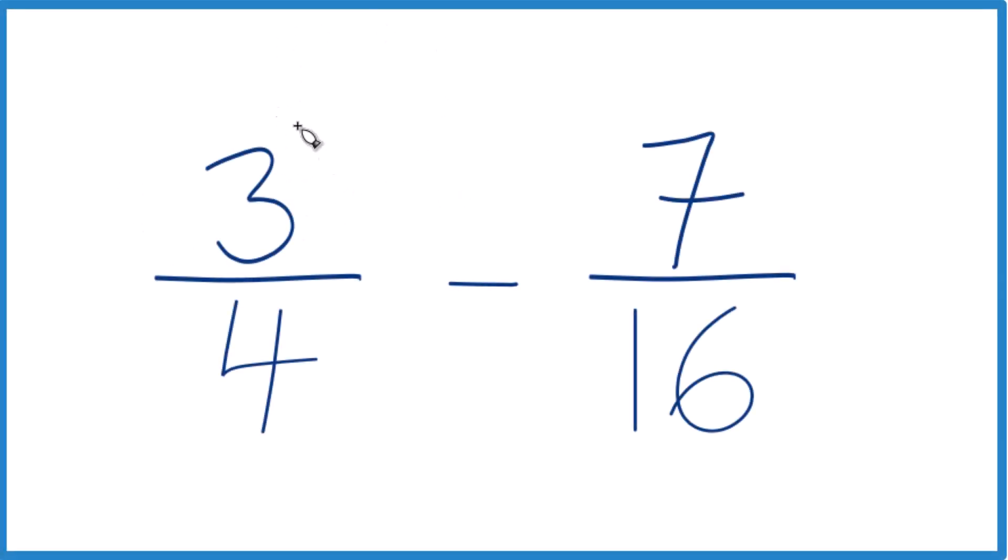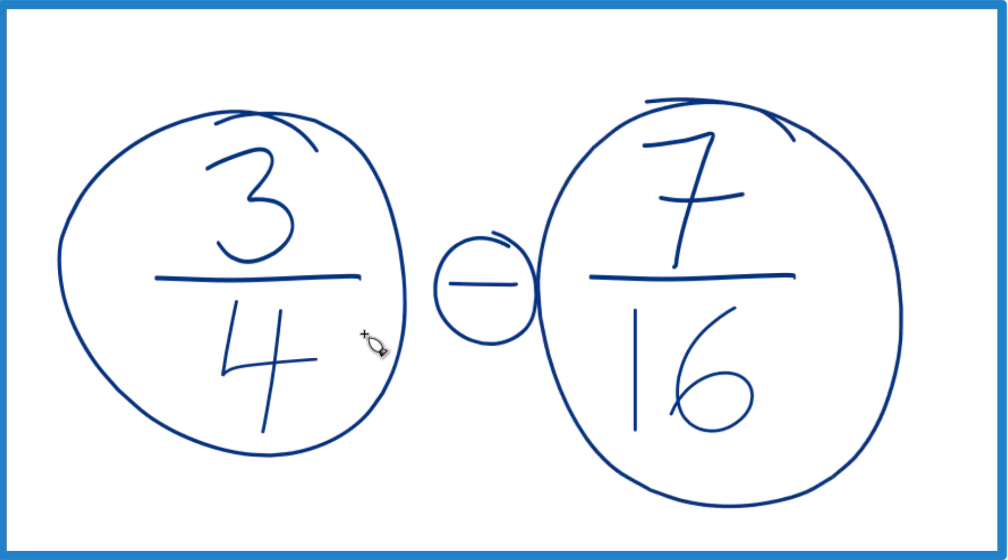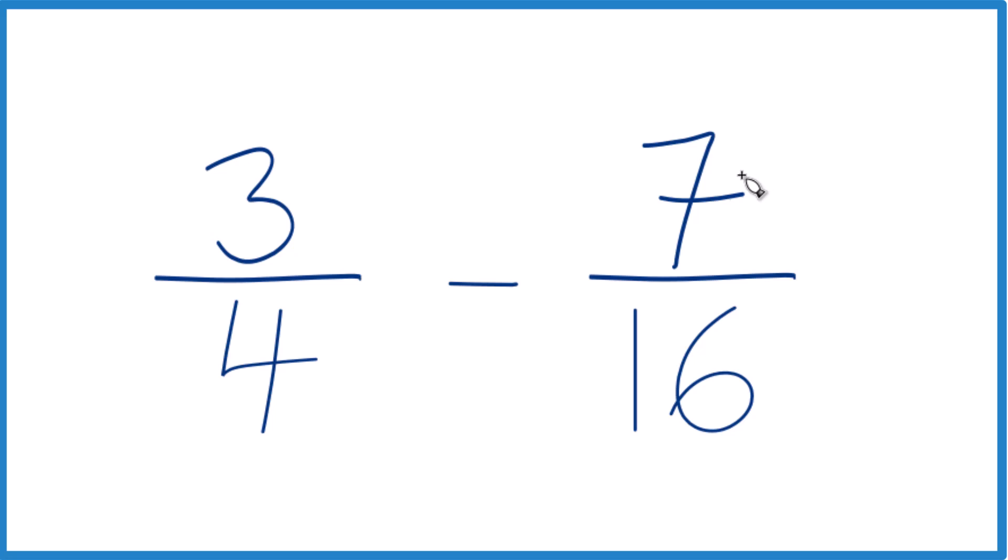So let's figure this out. We've got 3 fourths minus 7 sixteenths. And whenever we are working with fractions, whenever we're subtracting or adding fractions, we need to get a common denominator.